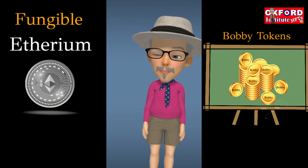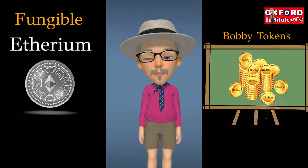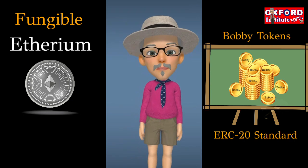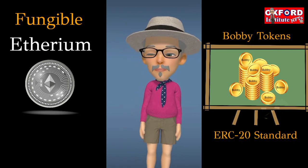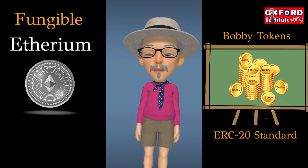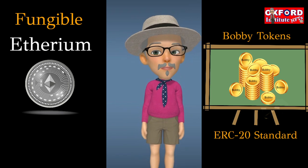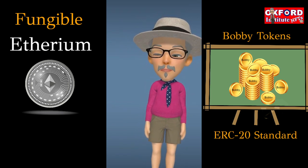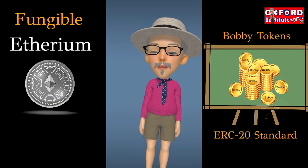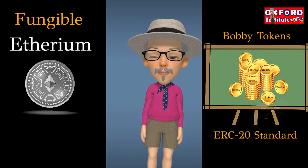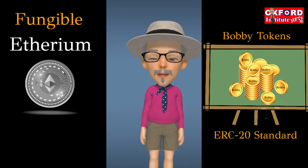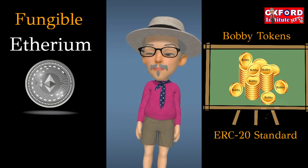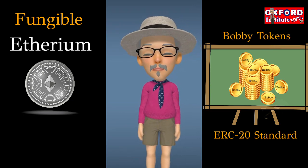To create your tokens on the Ethereum network, you use the ERC-20 standard and create fungible tokens. Fungible tokens have a property that makes each token exactly the same in type and value.